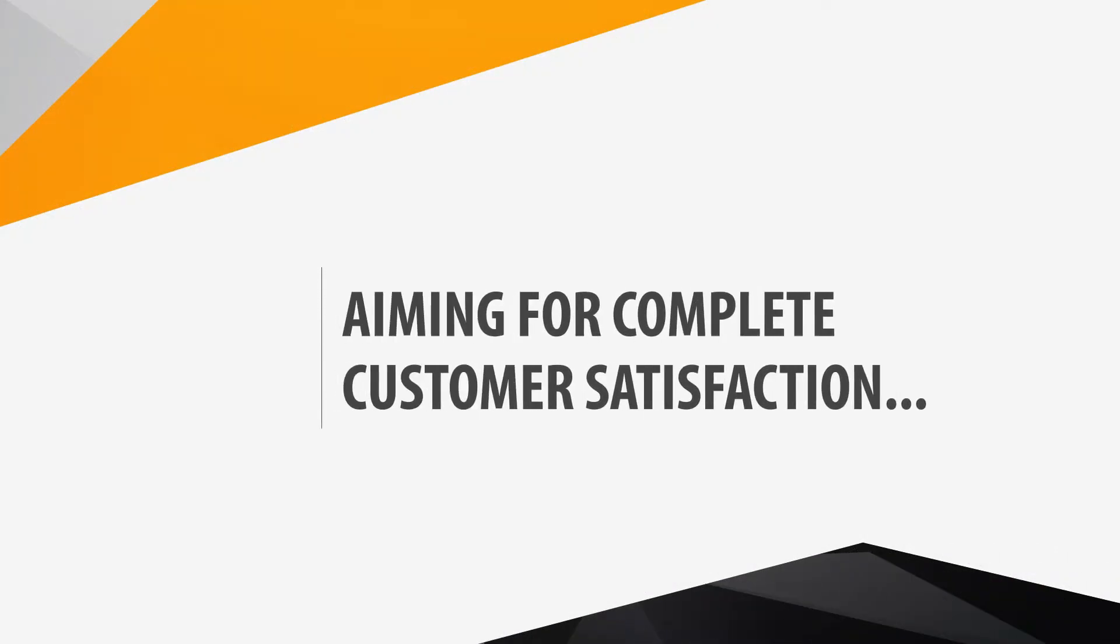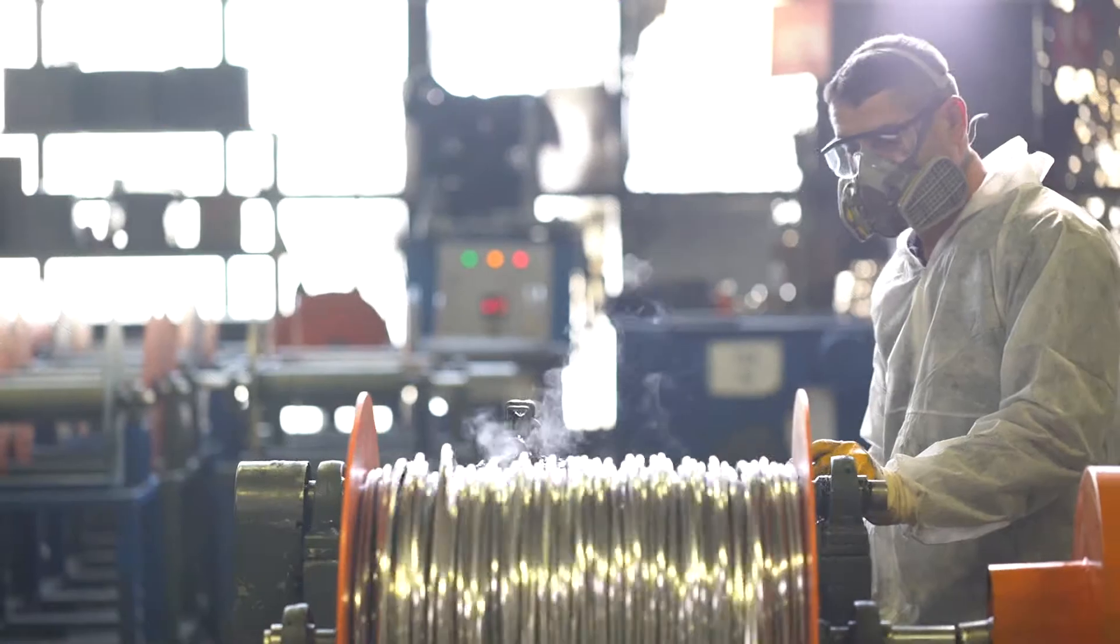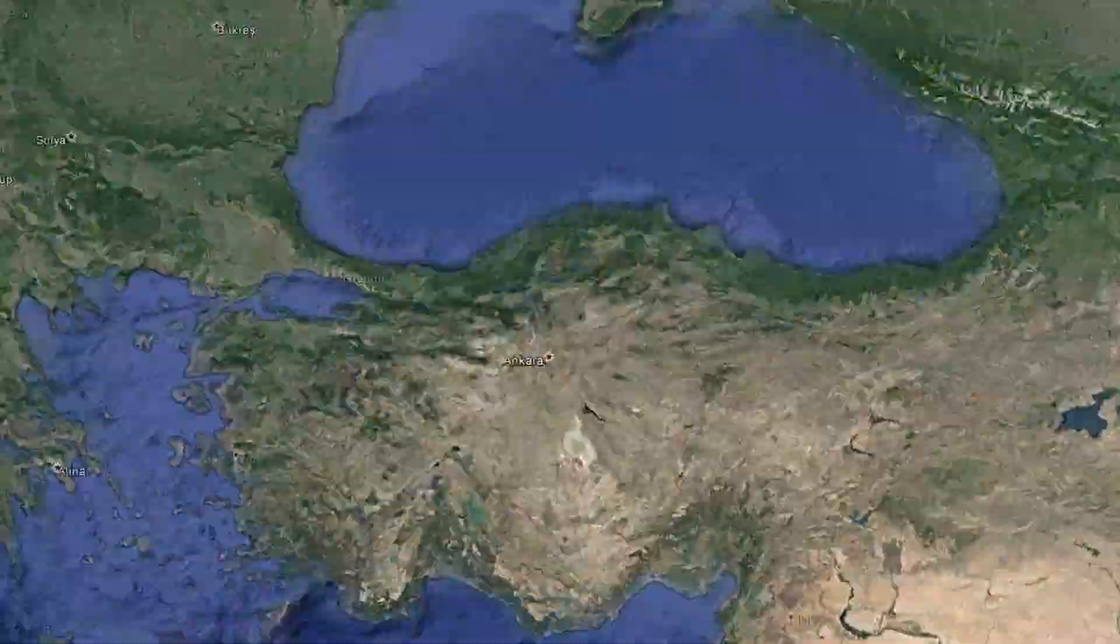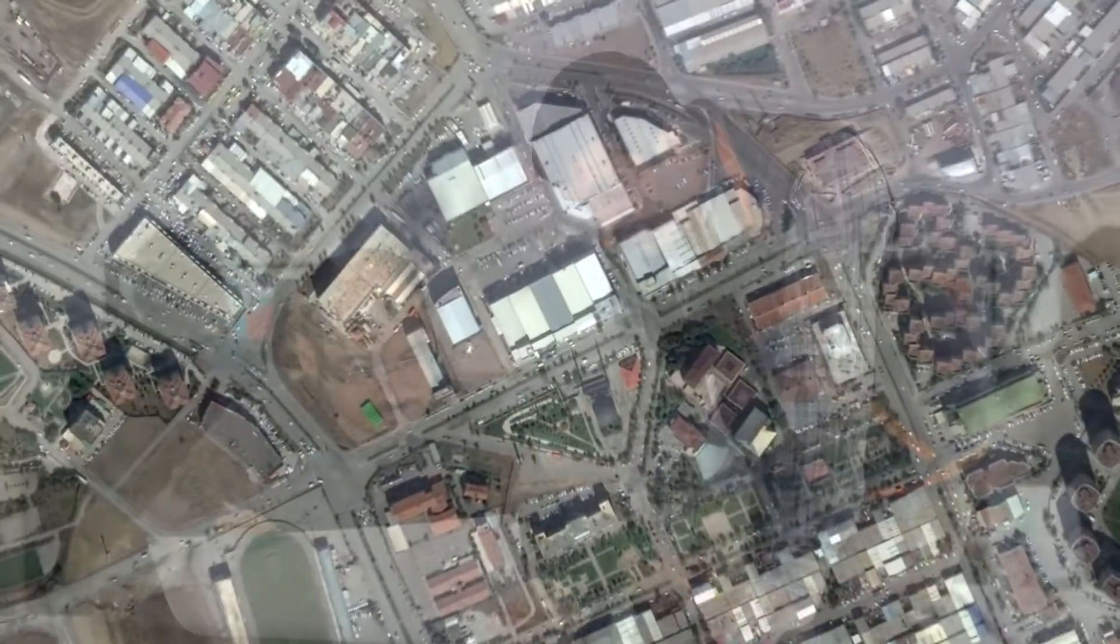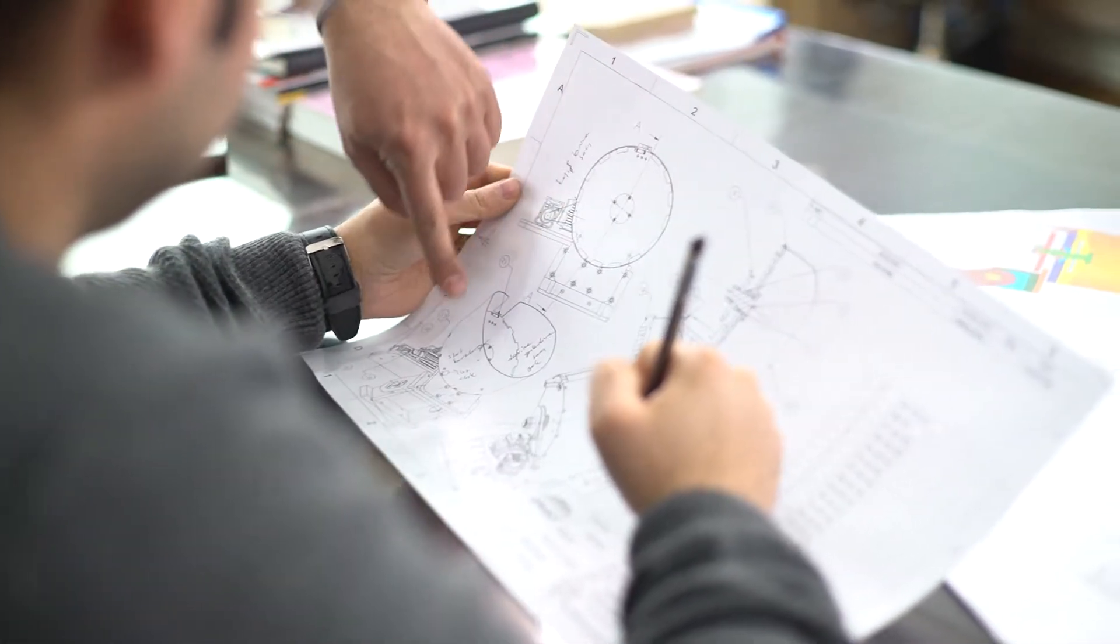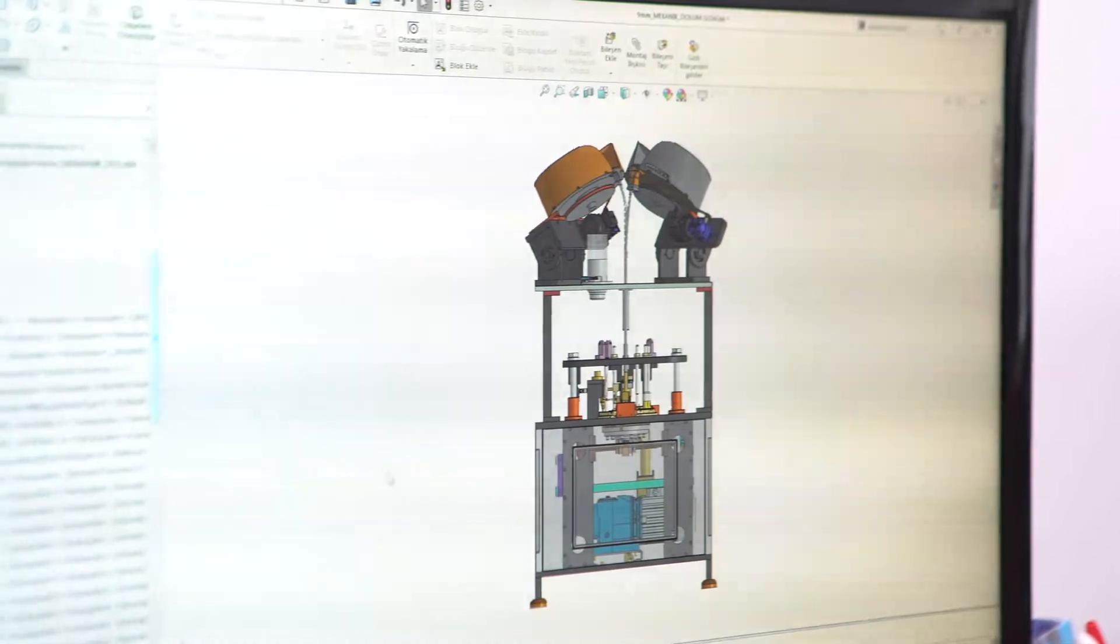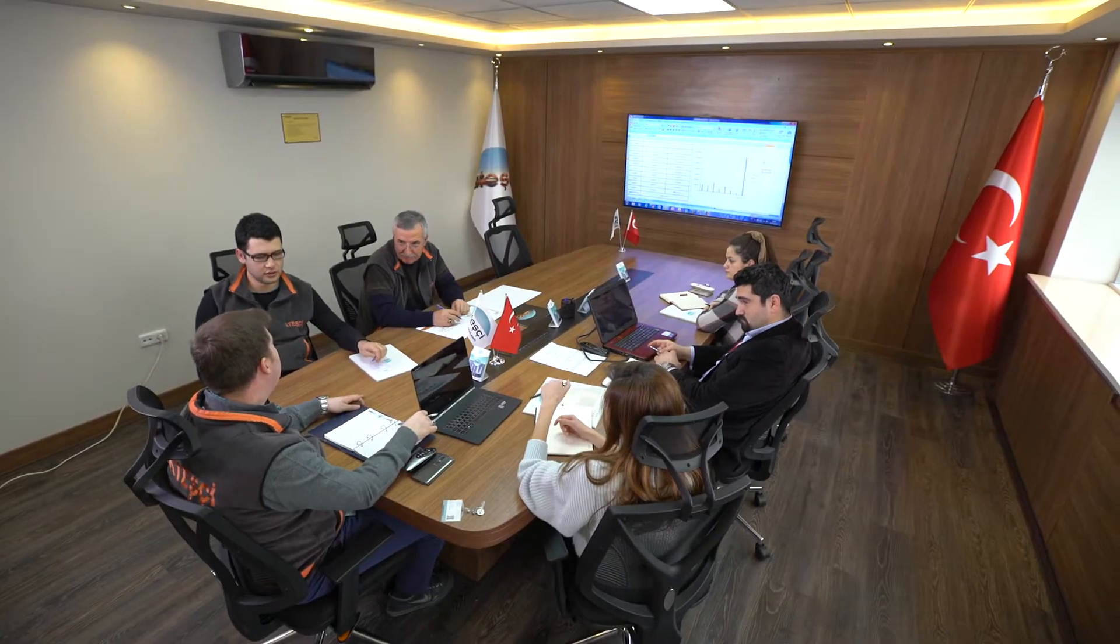Aiming for complete customer satisfaction, Ateschi is situated in the industrial zone in Ankara and is able to offer very short production periods by making use of the advantages provided by its location in the most effective manner, performing all services with the aim of perfect customer satisfaction.